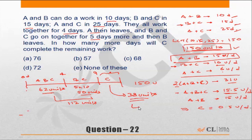And how much work does C need to do? 38 units. So we'll take 38 upon 0.5, which is equal to 38 times 2, which is equal to 76 days. Among the choices, choice A is the correct answer.